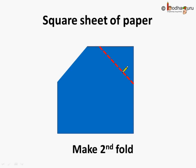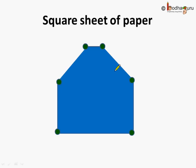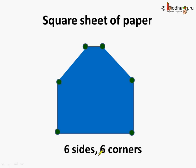Next, let's make another fold. This will be the second fold at this corner. After folding, the paper looks like this. How many corners and how many sides are there? Let's count. First the corners: one, two, three, four, five and six. There are six corners. And how many sides? Let's count: one, two, three, four, five and six. Now there are six sides. So the paper has six sides and six corners.